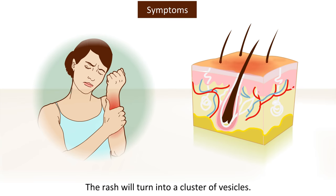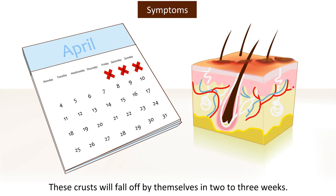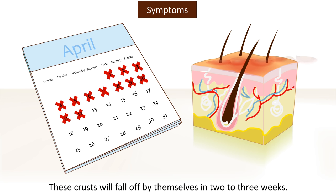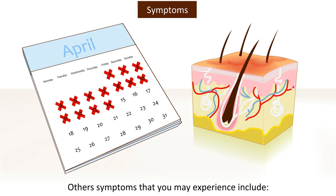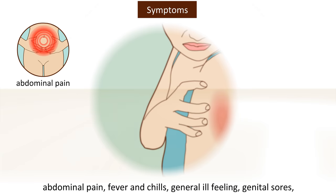The rash will turn into a cluster of vesicles. Then these vesicles break into small sores, which will dry and form crusts. These crusts will fall off by themselves in two to three weeks. Other symptoms that you may experience include abdominal pain,